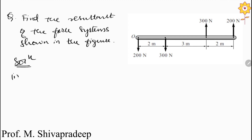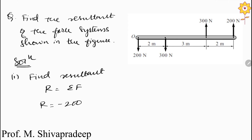The very first step is to find the resultant. To find the resultant, we know the formula: R is equal to the summation of all the forces acting on the system. So R equals 200 acting downward, which is negative; the second force is 300 acting downward, also negative; the third force is 300 acting upward, which is positive.